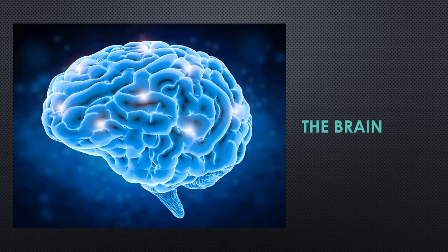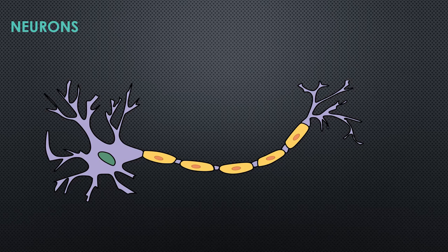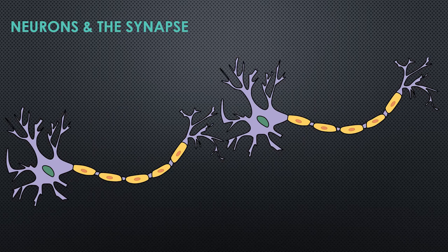The brain is a great organ — it controls everything we do. It's made up of billions of nerve cells called neurons, and it's the different patterns of electrical activity across those billions of neurons that allow us to think. A neuron will conduct electricity along it from one end to the other, and it's that pattern of electrical activity that allows us to think.